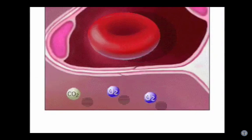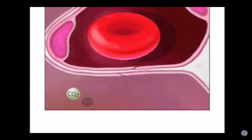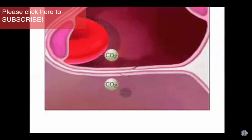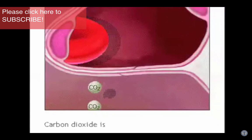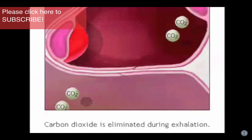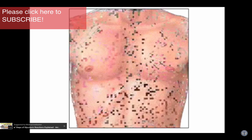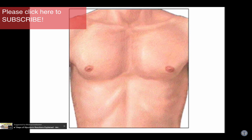Oxygen molecules attach to red blood cells, which travel back to the heart. At the same time, the carbon dioxide molecules in the alveoli are blown out of the body with the next exhalation. Gas exchange allows the body to replenish the oxygen and eliminate the carbon dioxide, both of which are necessary for survival.